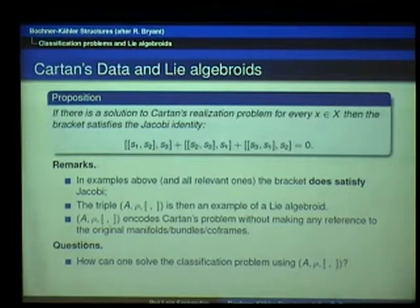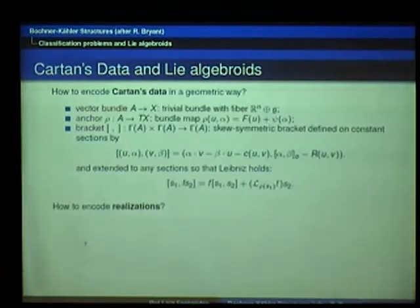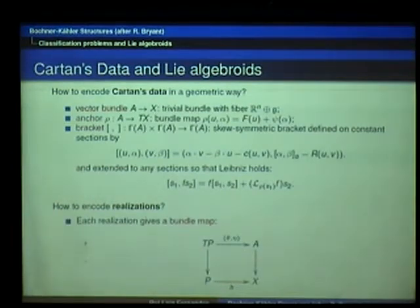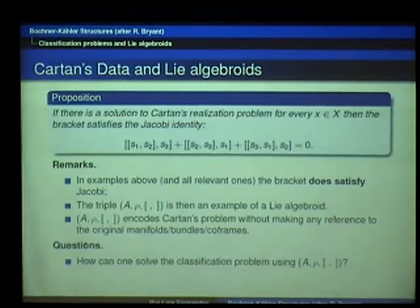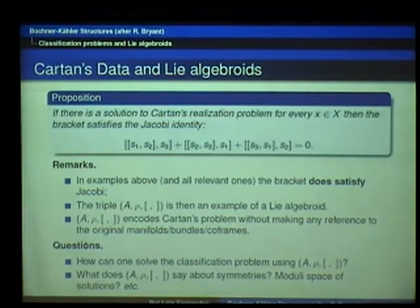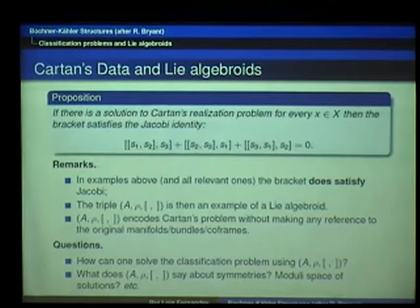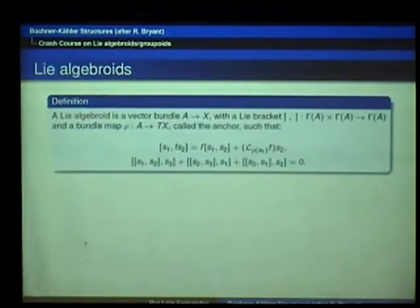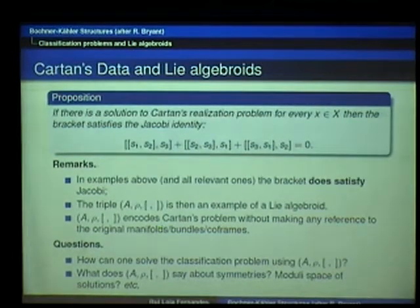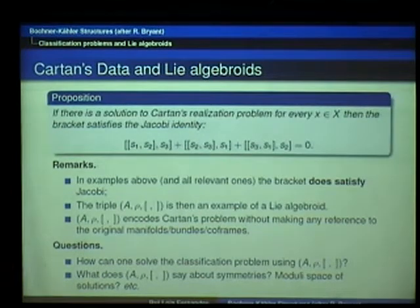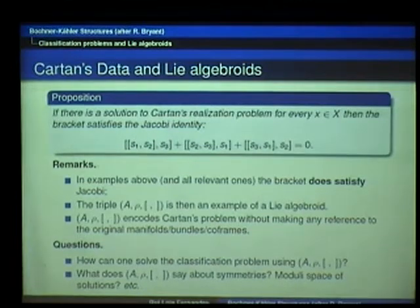Of course, if we want to solve the classification problem, we have to find this realization — we have to find these bundle maps. I didn't solve anything, I'm just translating things into some language. We don't want just to show that these things exist. We want to study their symmetries, describe the moduli space of solutions — is it smooth, is it singular? It turns out that this approach provides answers to all these questions. In the end, I will want to explain how to solve this problem using these tools. For that, I'm going to give you a small crash course on extended Lie theory — these Lie algebroids and their global versions, which are called Lie groupoids.